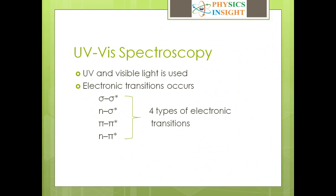This spectroscopy is named UV visible spectroscopy because the incident light used lies in the ultraviolet and visible region. When the light falls on the molecules, they absorb energy in the form of ultraviolet or visible light to excite electrons to higher anti-bonding molecular orbitals.